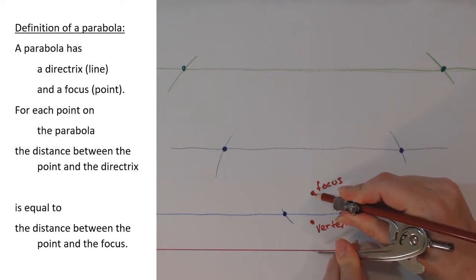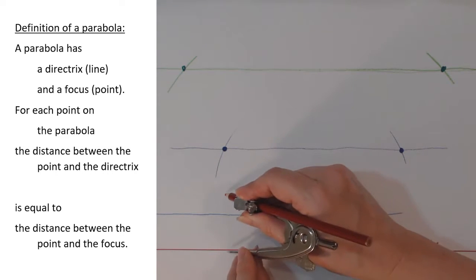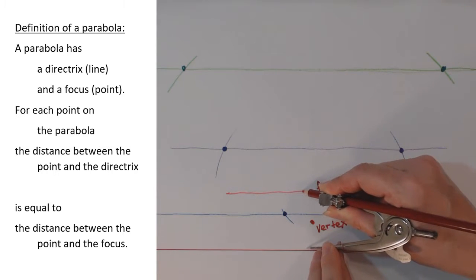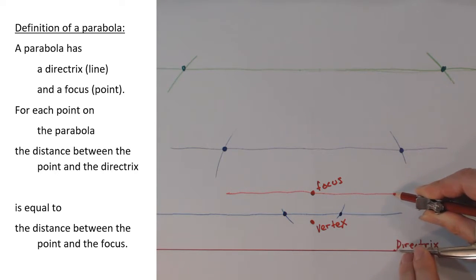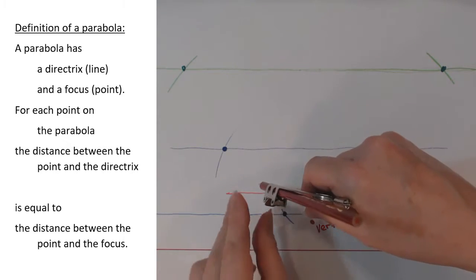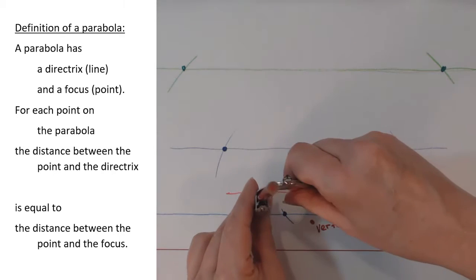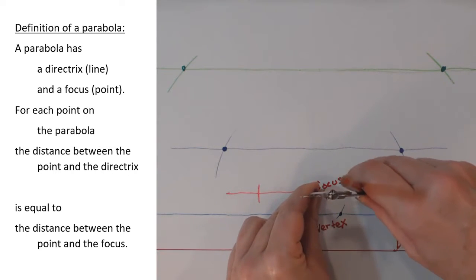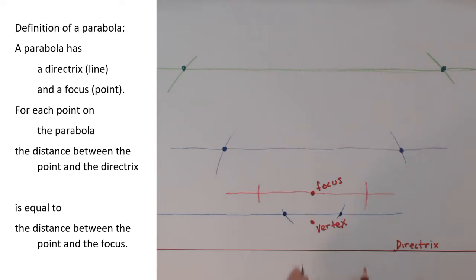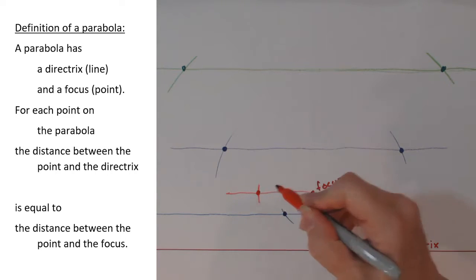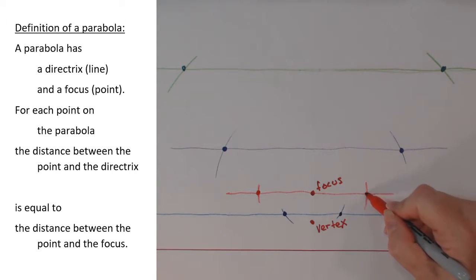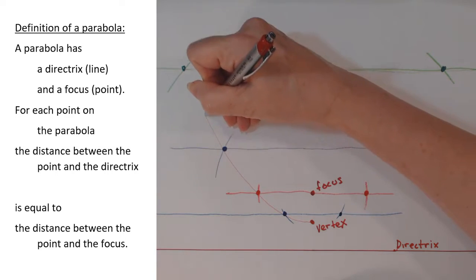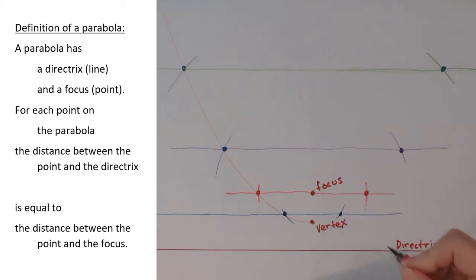Next I'm going to set the compass for exactly the distance between the directrix and the focus — in this case two inches — and draw a line parallel to the directrix, only this one runs through the focus. Then I draw arcs of points that are two inches away from the focus, and I find two more points on the parabola. Now that we have all these points, the next thing to do is to sketch a parabola through the points.